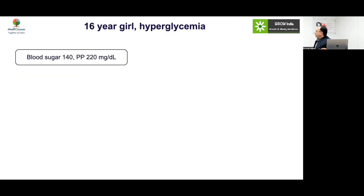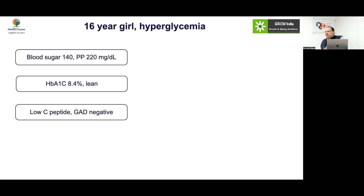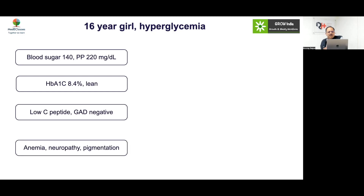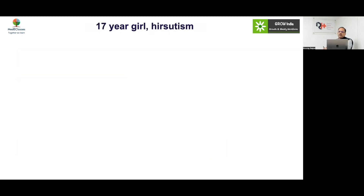Case: A 16-year-old lean girl with hyperglycemia (blood sugar 140–220), HbA1c 8.4%, low C-peptide, negative GAD, anemia, numbness in the hand, and skin pigmentation. This points to a thiamine transporter defect, and a diagnosis of Roger syndrome should be considered.